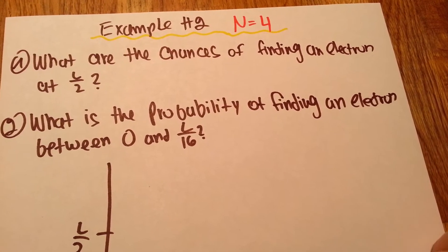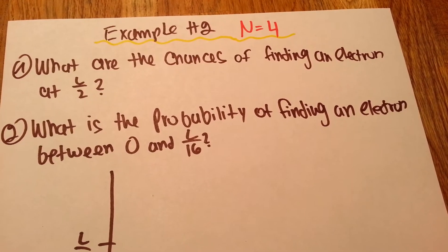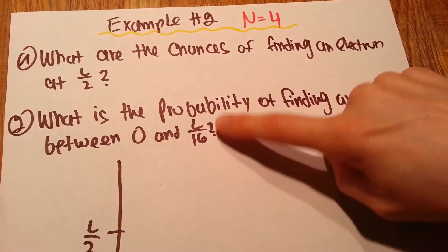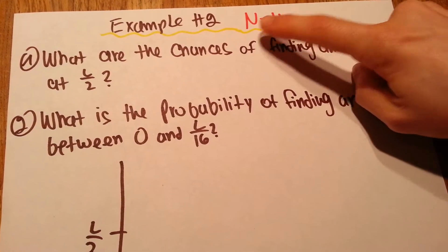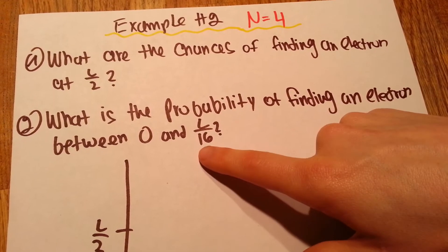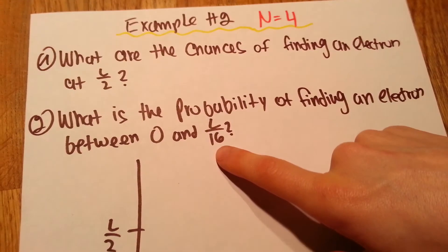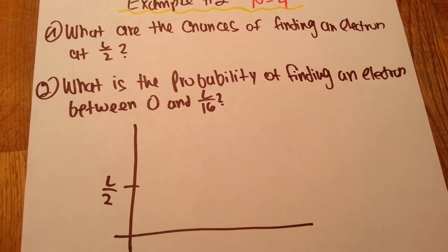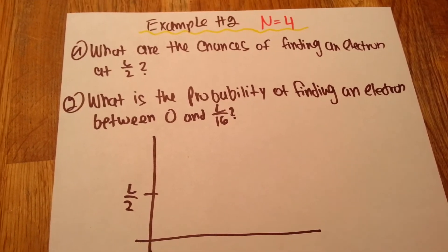And this might seem intimidating at first because we have L divided by 2 and L divided by 16, which does not correspond to our n equals 4. Usually we're used to getting numbers divided by 4. But it's fine, don't freak out. You'll soon see that we can definitely handle this.